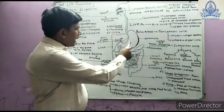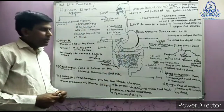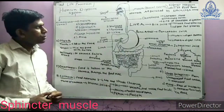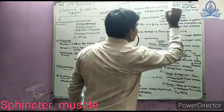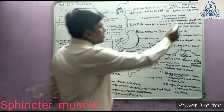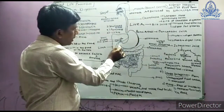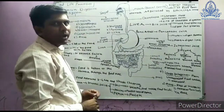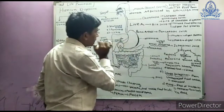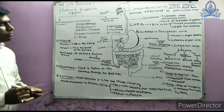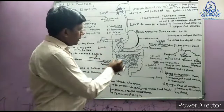After the stomach, the food enters the small intestine. One muscle is very important in regulating this process — that is the sphincter muscle. The exit of food from the stomach is regulated by the sphincter muscle. By the help of this muscle, food is moved from the stomach into the small intestine.